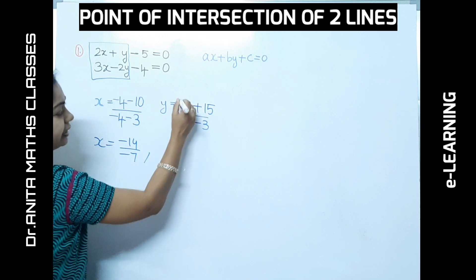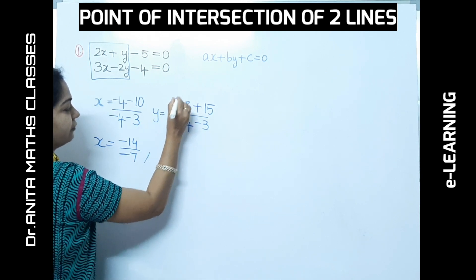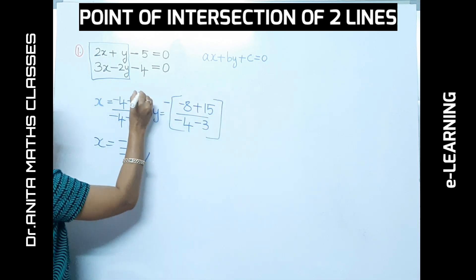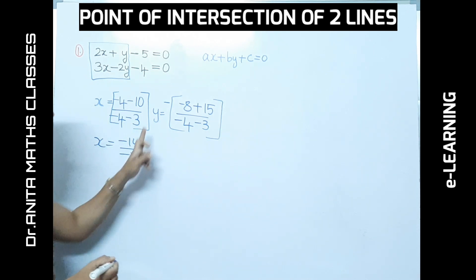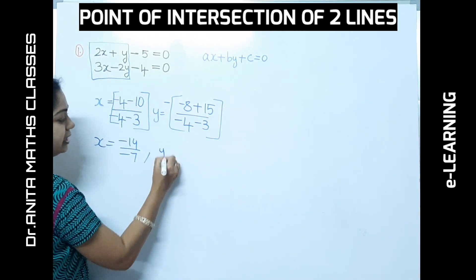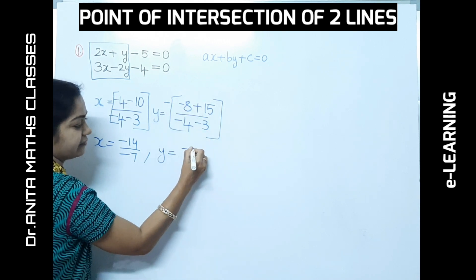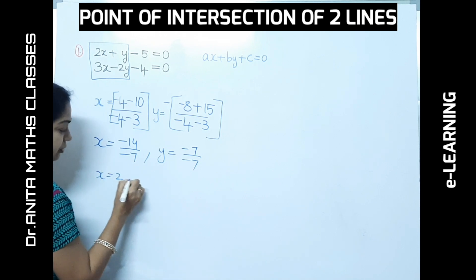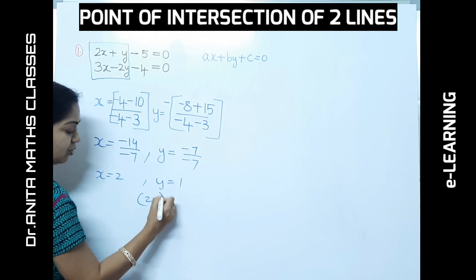So x = −14 / −7 = 2. For the y part, remember to take the negative of the result: y = −(7 / −7) = 1. So the point of intersection is (2, 1).